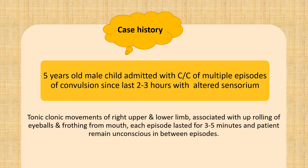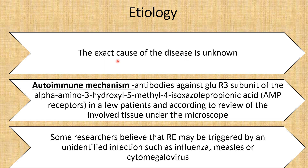The exact etiology of Rasmussen's encephalitis is unknown. A few propose that it may be autoimmune encephalitis, as antibodies against the GluR3 subunit of the AMPA receptors have been found in some patients, and under the microscope antibodies were also found. A few think it may be due to some unidentified infection — for example, influenza, measles, and cytomegalovirus — which triggered and led to Rasmussen's encephalitis.